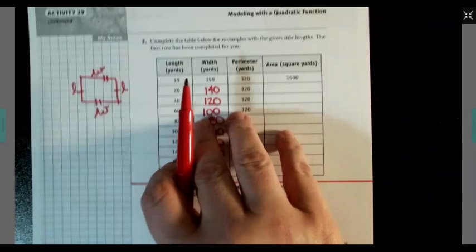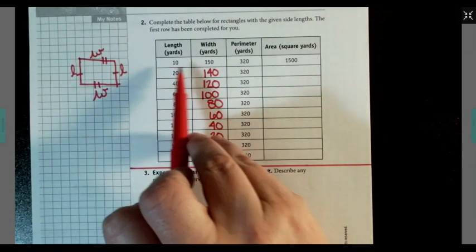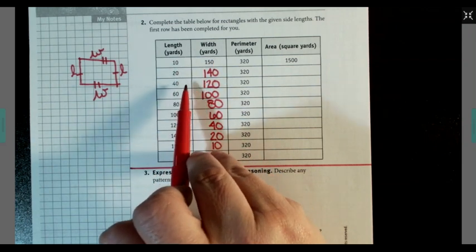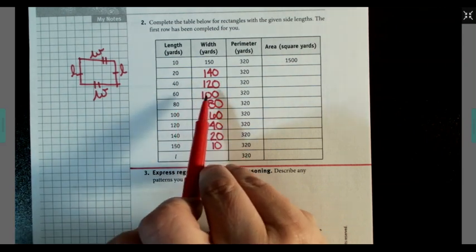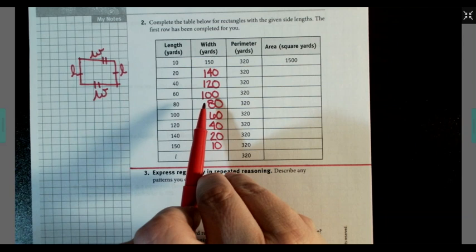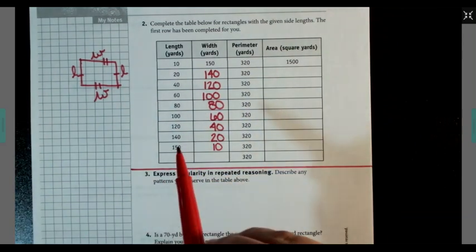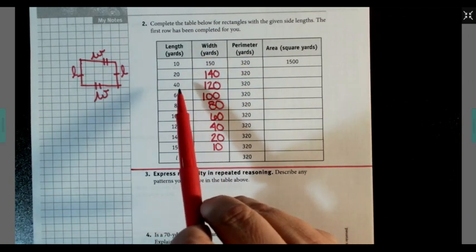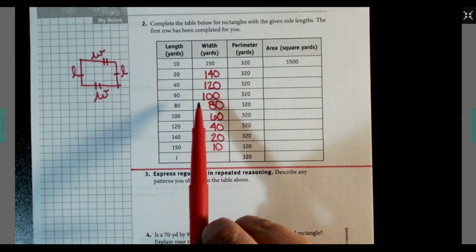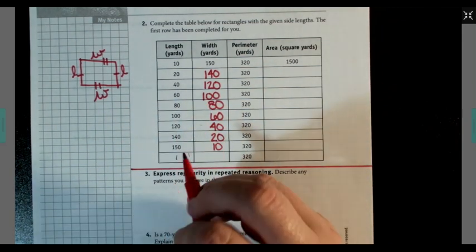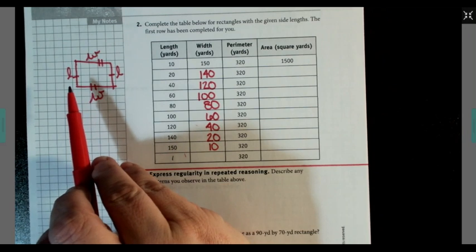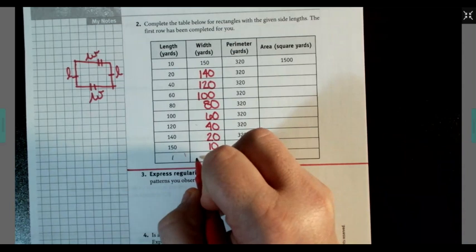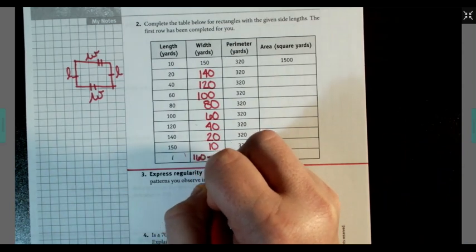I want to know is there any type of relationship between the length and the width here. 10 and 150, 20 and 140, 40 and 120, 60 and 100, 80 and 80. Looks like they're combining to the same amount each time: 160, 160, 160, 160, 160 and continues on. So if I know that the length is L, how would I find the width? 160 minus L.